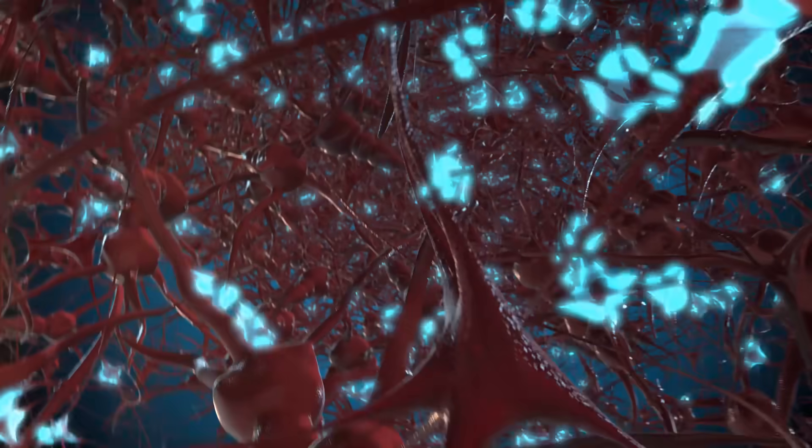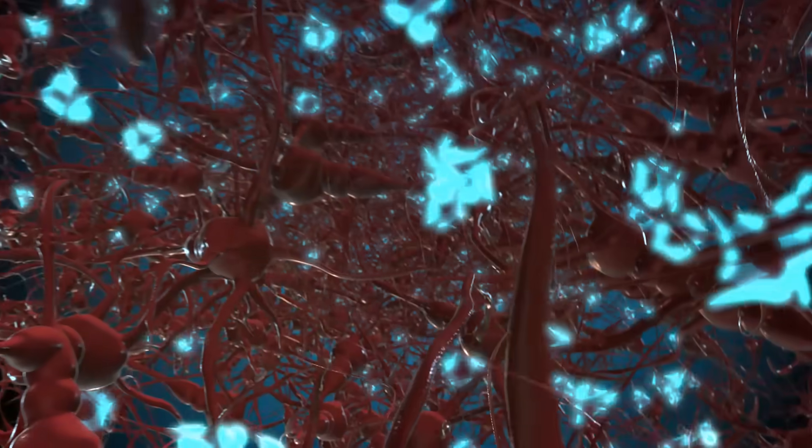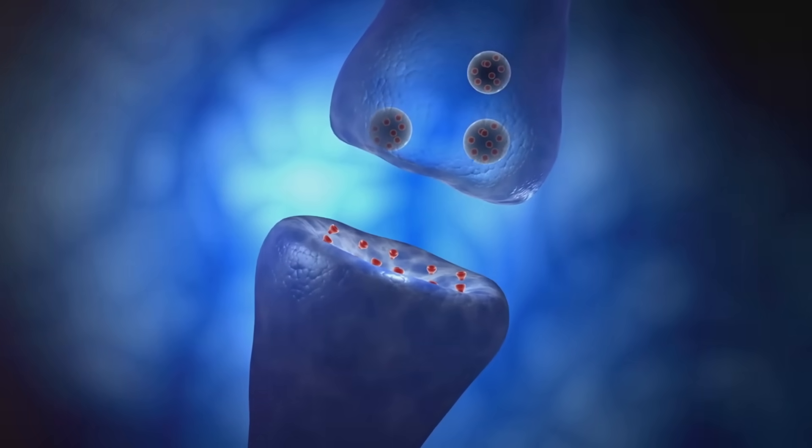Speaking of roles, beta amyloid is a bit of a multitasker. In the brain, it helps with cell signaling and synaptic function.